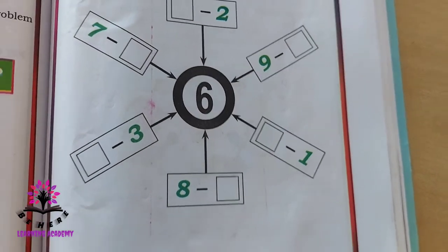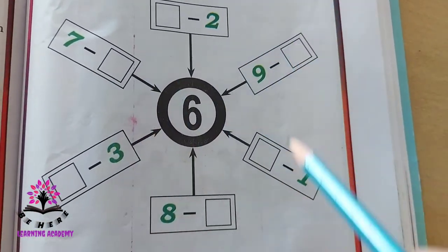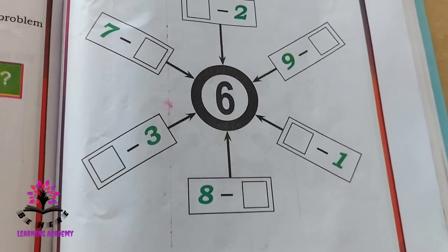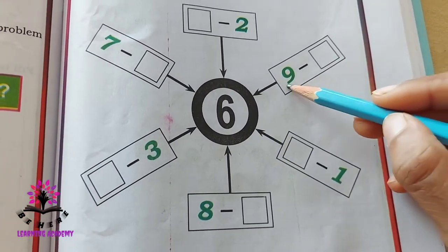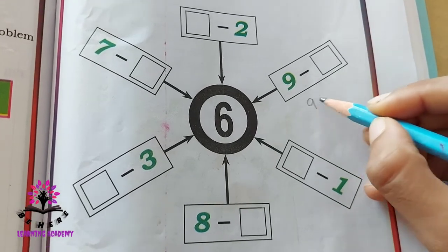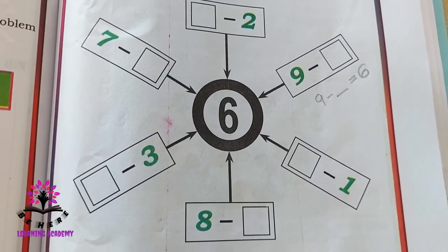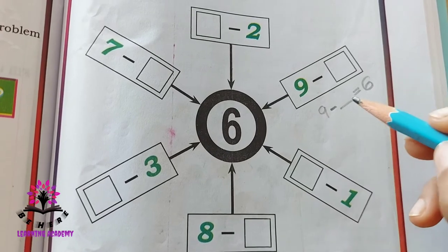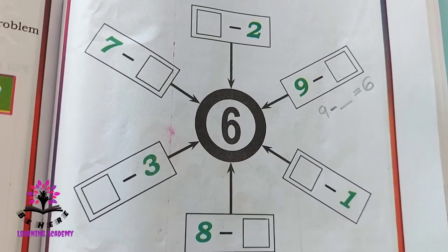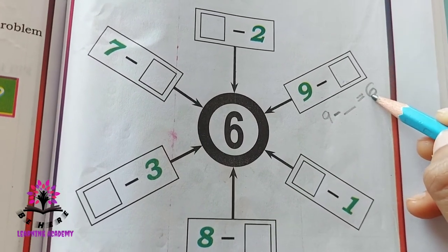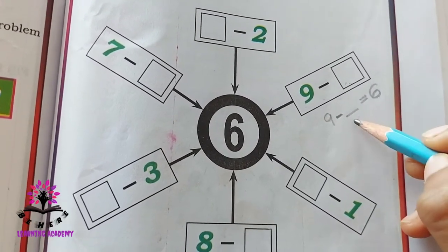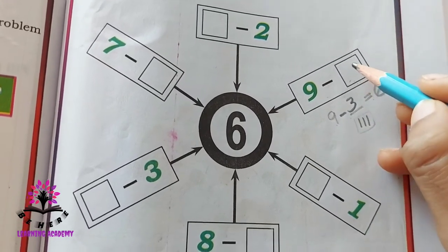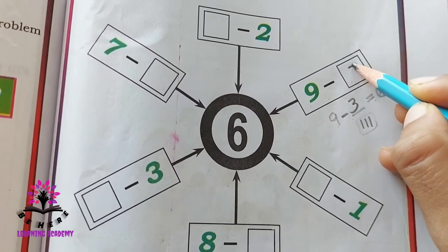Here there is one more fill-in-the-blanks. Here you have to subtract, but the answer should be six. Now: nine minus how much equals six? Count from six up to nine — six, seven, eight, nine — that is three steps. So nine minus three will be six. The answer is three.